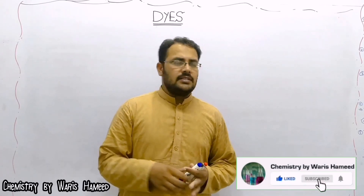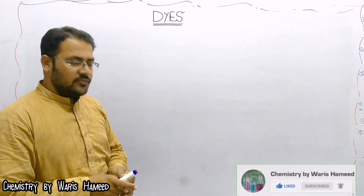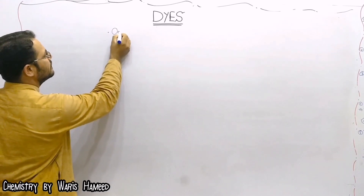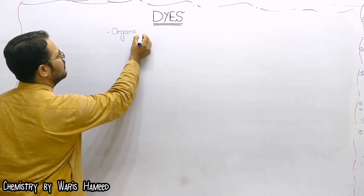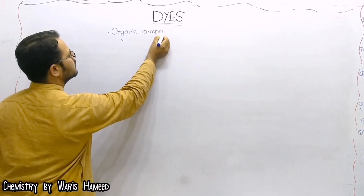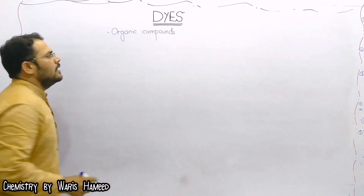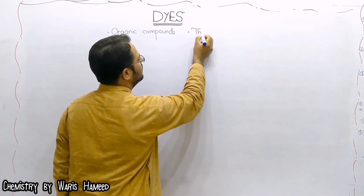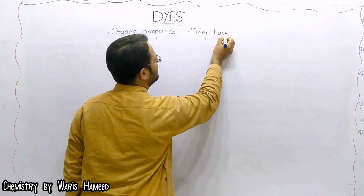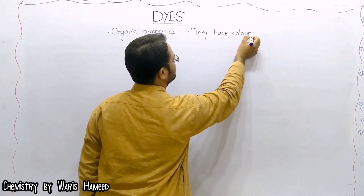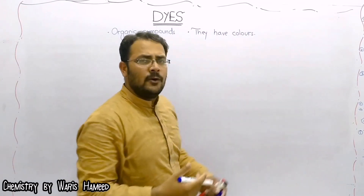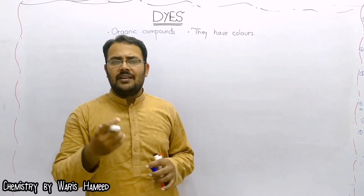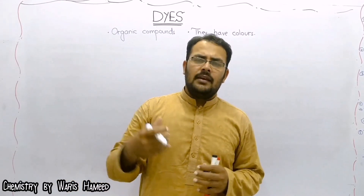In this video we will discuss about dyes and their classification. First, a little introduction about dyes. Dyes are actually organic compounds, and dyes have a specific color. They have colors because when some light falls on their surface, they have the ability to reflect a part of that light back and show some color.